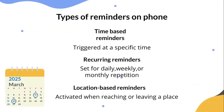Types of reminders on your phone: there are time-based reminders, which remind you at a specific time; recurring reminders, which repeat — for example, every day to walk your dog, every week to go to church, or every month to pay a bill.